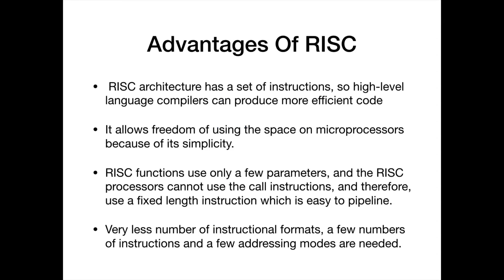Advantages of RISC: RISC uses a highly optimized set of instructions, so high-level language compilers can produce more efficient code. Because the instruction set of a RISC processor is so simple, it uses much less chip space. Extra functions such as memory management units or floating-point arithmetic units can also be placed on the same chip. Since RISC functions use only a few parameters, the RISC processor uses fixed-length instructions which are easy to pipeline. Because of pipelining, RISC processors often achieve two to four times the performance of CISC processors using comparable semiconductor technology and the same clock rates. In RISC, very few instruction formats, a few instructions, and a few addressing modes are needed.